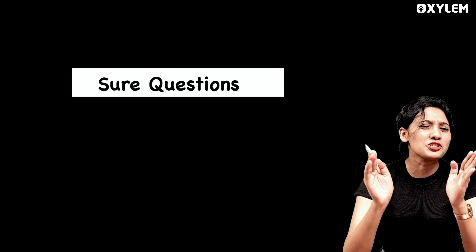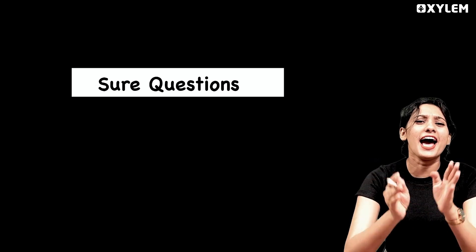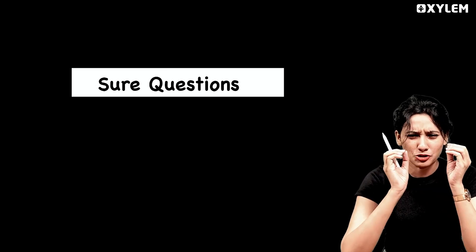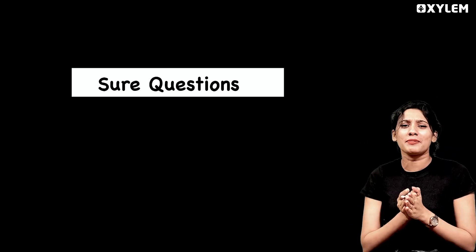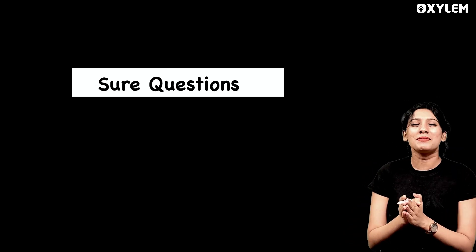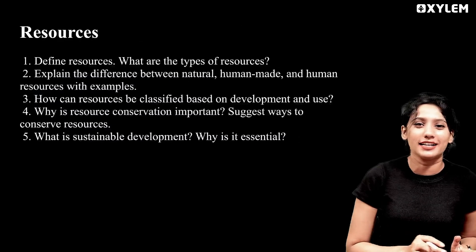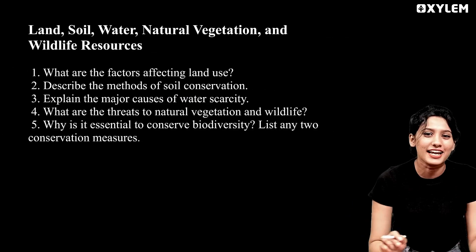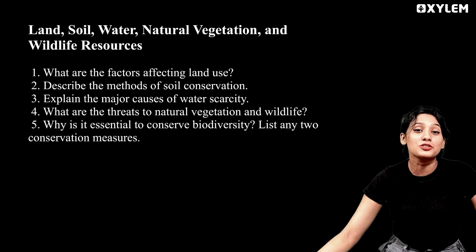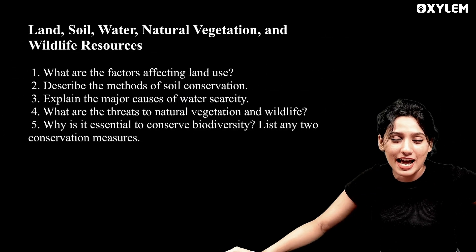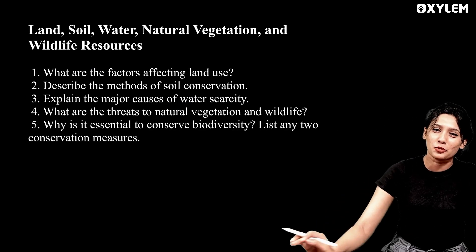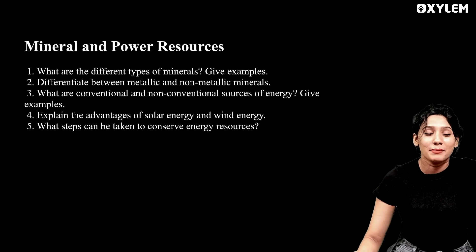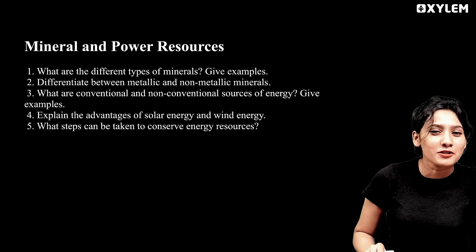There are three chapters in Geography with important items. The first chapter is Resources. The second chapter is Land, Soil, Water, Natural Vegetation and Wildlife Resources. And the third chapter is Mineral and Power Resources.